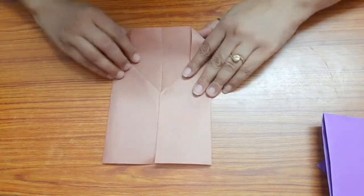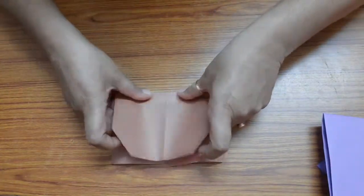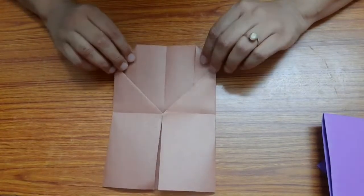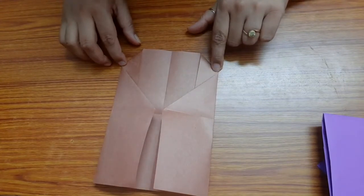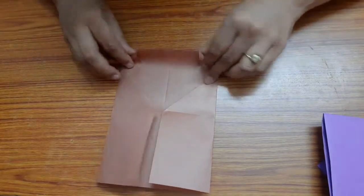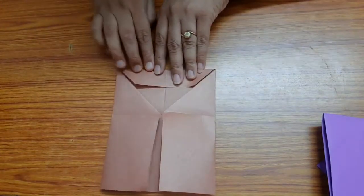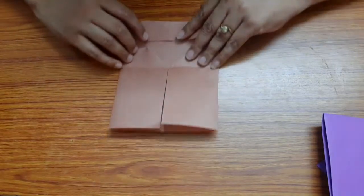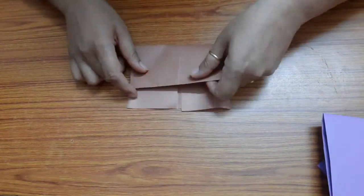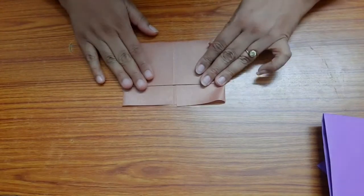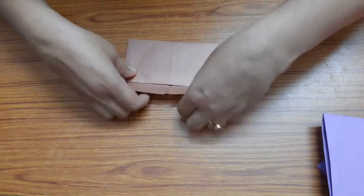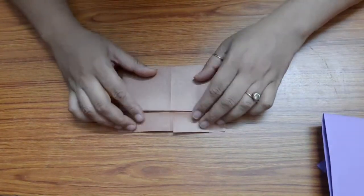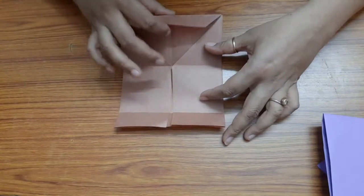Fold it in half here and open. Now this is the flap, so we'll make a fold from these two corners. Now fold it on this length - the excess also - fold it in once. Now open it, this is the flap.